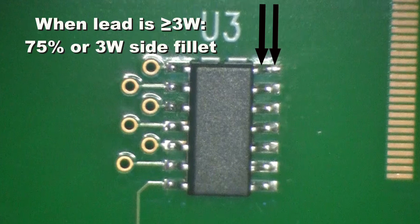If the lead is greater than or equal to 3 times the lead width, then a minimum of 75% or 3 times the lead width, whichever is longer, must be soldered along the side of the leads.